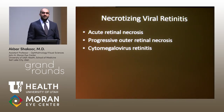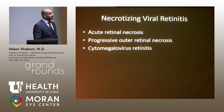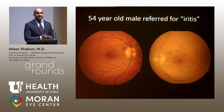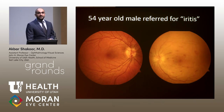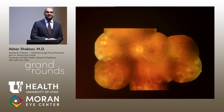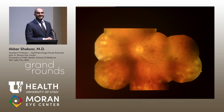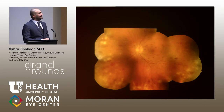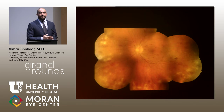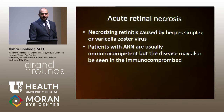Necrotizing viral retinitis includes acute retinal necrosis (ARN), progressive outer retinal necrosis (PORN), and CMV retinitis. Consider a 54-year-old gentleman referred for iritis: looking at the fundus, you can see retinal whitening in the periphery, multiple foci becoming confluent with some hemorrhage but not a lot. This is acute retinal necrosis — a necrotizing retinitis caused by herpes simplex or varicella zoster. It may be seen in both immunocompetent and immunocompromised patients. Patients present with hot eyes, moderate to significant vitritis, optic disc edema, and optic neuropathy if not treated promptly.